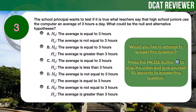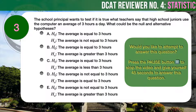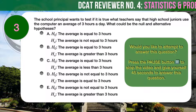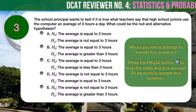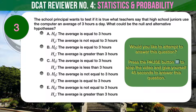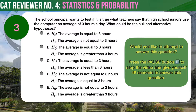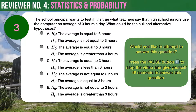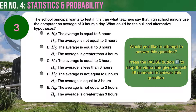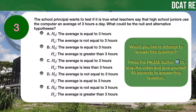Question number 3. The school principal wants to test if it is true what teachers say, that high school juniors use the computer an average of 3 hours a day. What could be the null and alternative hypotheses? A. Null hypothesis: the average is equal to 3 hours. Alternative hypothesis: the average is not equal to 3 hours.